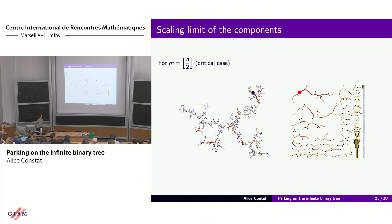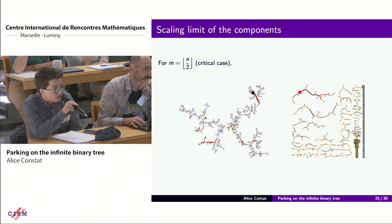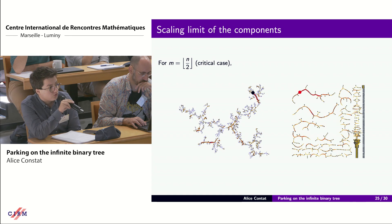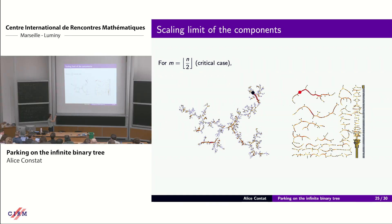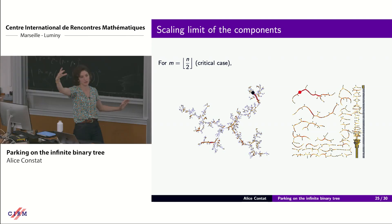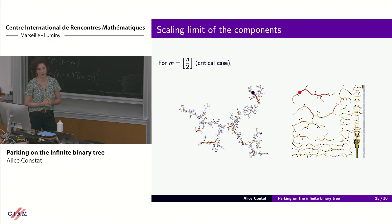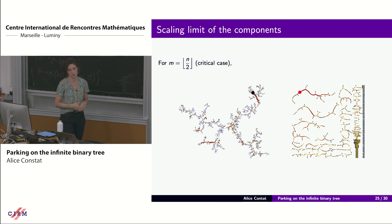Question about the line: in the subcritical case the clusters are of maximum size log n, and in the supercritical case they are linear. The critical case gives n to the two-thirds, which we believe is universal. We obtained this n to the two-thirds by linking the parking model with the Erdős-Rényi model and the phase transition for the giant component, and we believe we can obtain a similar result by linking the parking model on critical Galton-Watson trees with the configuration model.